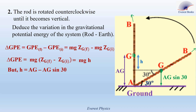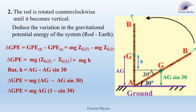Substituting H into the formula gives: delta GPE = M·G·(AG − AG·sin 30) = M·G·AG·(1 − sin 30). Numerically: mass = 2 kg, gravitational acceleration = 10 m/s², AG = AB/2 = 0.3 m, sin 30 = 0.5. So delta GPE = 2 × 10 × 0.3 × (1 − 0.5) = 3 joules.